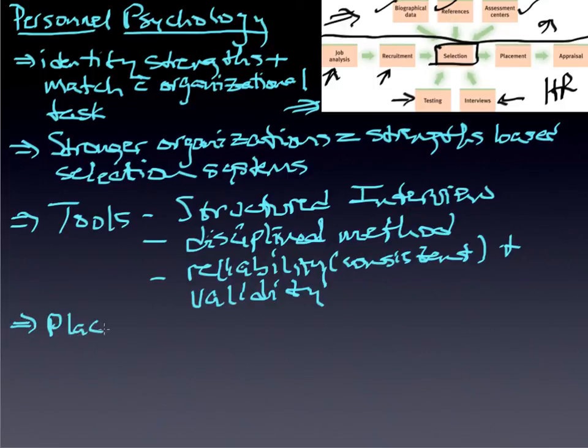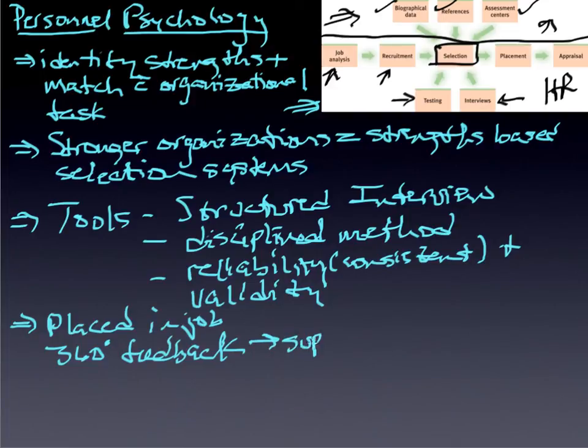When the person is actually finally placed, oftentimes what organizations will do on a regular basis is something that they refer to as a 360-degree assessment or feedback. And what that means is that you get feedback from all corners of your influence arena. So that means supervisors, it means peers, it means people who answer to you. So we often refer to those as direct reports. In other words, the people who report to you are considered direct reports.